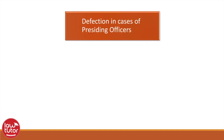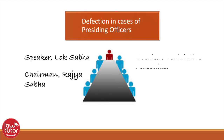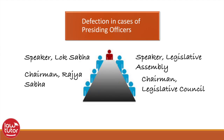Defection in cases of presiding officers. The Speaker of the Lok Sabha, the Legislative Assembly, or the Chairman of the Rajya Sabha are not disqualified as defectors if they give up membership of their political party. Similarly, after having given up the office of Speaker or Chairman, if they rejoin the political party they previously belonged to, that too does not make them defectors.